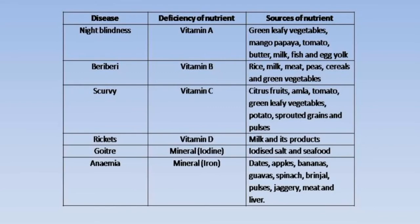Rickets happen when there is a deficiency of Vitamin D. Next is goiter - goiter happens when there is a deficiency of iodine. To prevent goiter, we need to take iodized salt, and seafood is also rich in iodine.